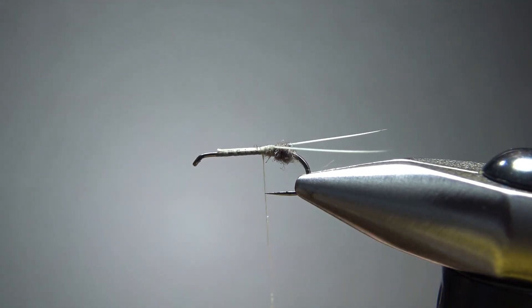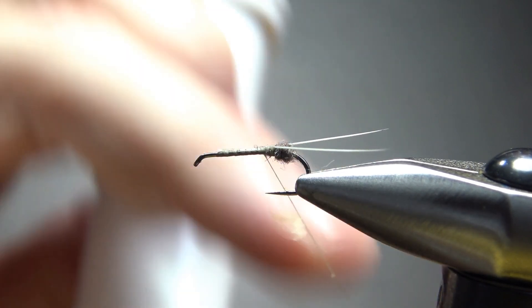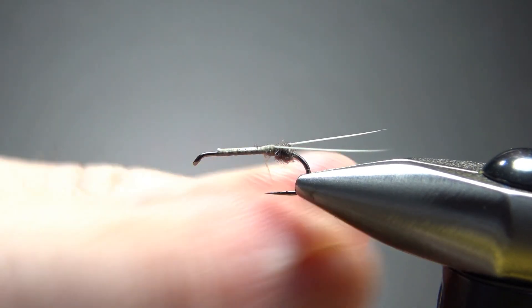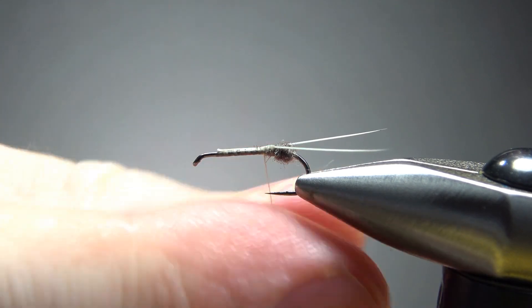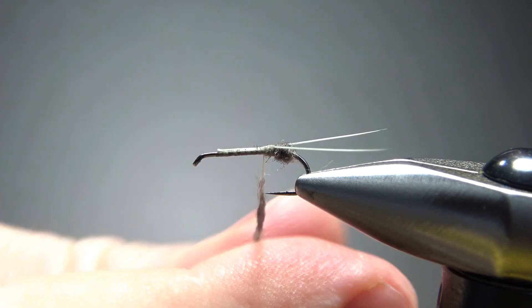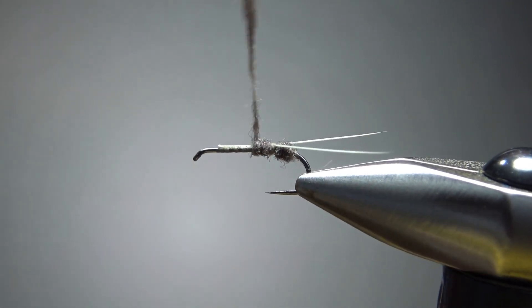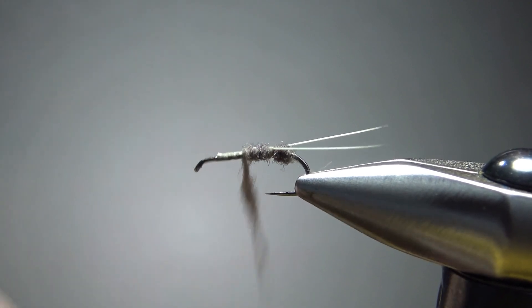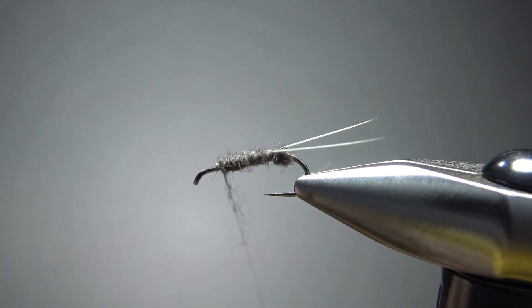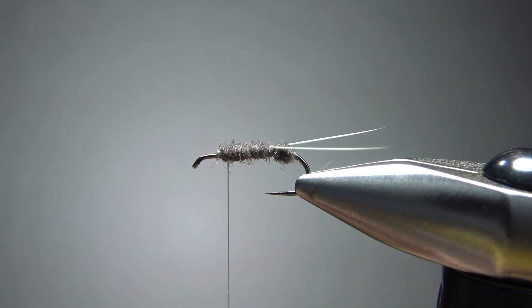Okay, now let's dub the body. Put a little bit more wax on and some of that same dubbing. We're going to go too far or you'll start crowding your eye after you've done your wings. So that's really about as far up as I want to go.